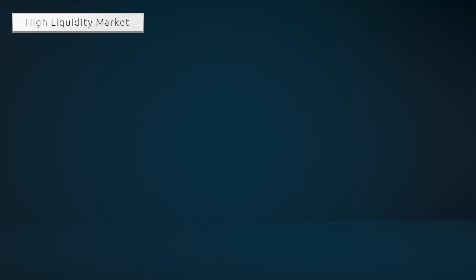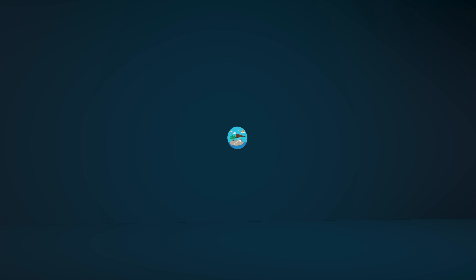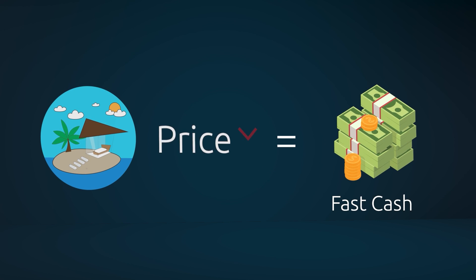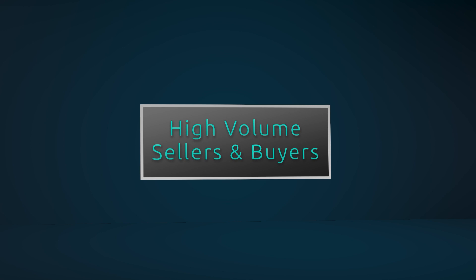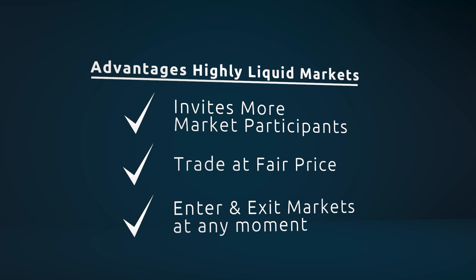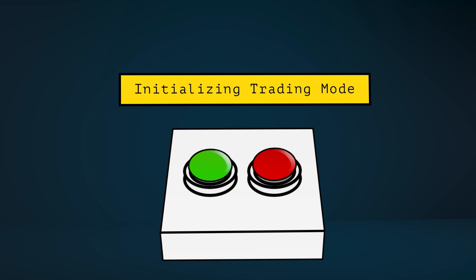Markets with better liquidity allow participants to enter or exit an investment position faster and at a fair price. Going back to the real estate example: if you're not in a hurry, you can put your house for sale at a fair market price and wait a few months until someone appears willing to pay that price. But if you need to get your hands on cash fast, you have to keep lowering the sell price to attract more potential buyers. The same logic is true for any other market. High liquidity markets — where it's easier to find buyers and sellers — tend to attract more participants, because investors can open and close positions at any moment they want. Every market participant has a different reason to buy or sell an asset, and maybe even more importantly, a different sense of when to do that.